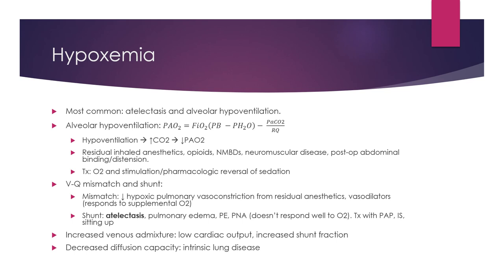Ventilation-perfusion mismatch is another cause of hypoxemia in the PACU. A common reason is decreased hypoxic pulmonary vasoconstriction from residual anesthetic or vasodilators received intraoperatively, and this usually responds well to supplemental oxygen. However, if a patient has a true shunt — most commonly from atelectasis, but also pulmonary edema, pulmonary embolism, or pre-existing pneumonia — oxygen alone won't always work. Treatment includes positive airway pressure like CPAP, incentive spirometry, or sitting the patient up in bed.